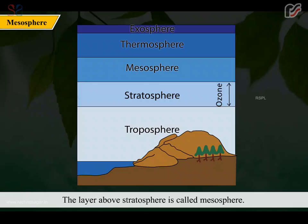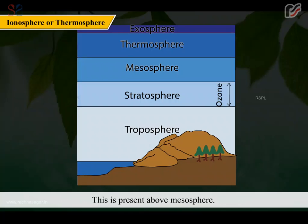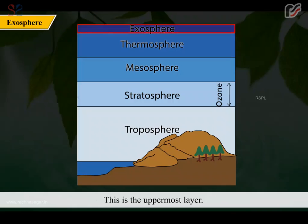The layer above stratosphere is called mesosphere. Meteor showers are seen in this layer of atmosphere. This is present above mesosphere. It is a very thin layer. This layer is used for the transmission of radio waves. This is the uppermost layer. There is no air in this layer. Also, earth's gravity is very weak here.